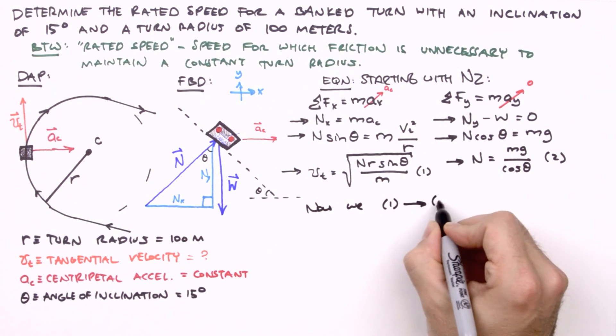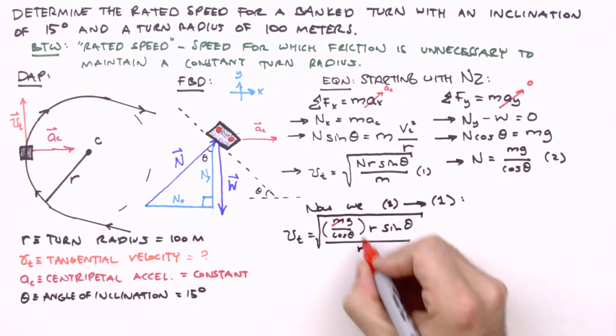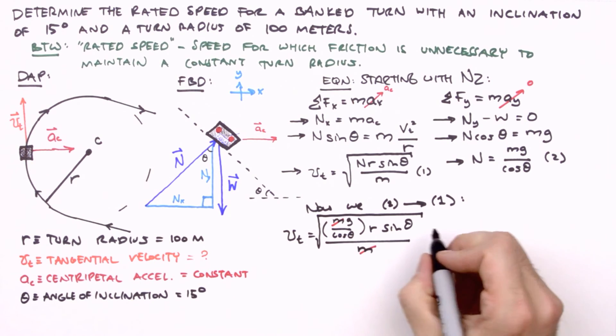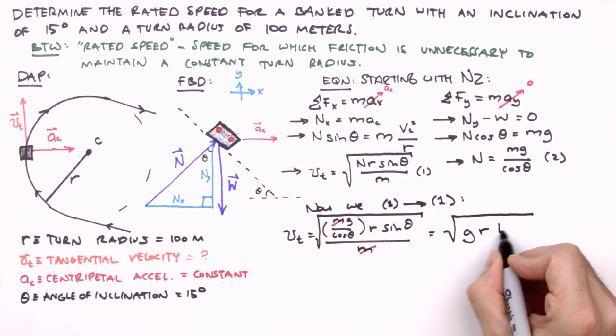So now we insert equation two into equation one, and we get v sub t equals the square root of mg over cos theta times r sine theta divided by m. The m's divide out, revealing an interesting physical insight about rated speeds, and the trigonometric functions combine to give us tangent theta. So we're left with v sub t equals the square root of g r tangent theta.